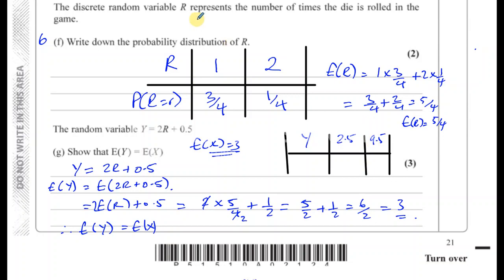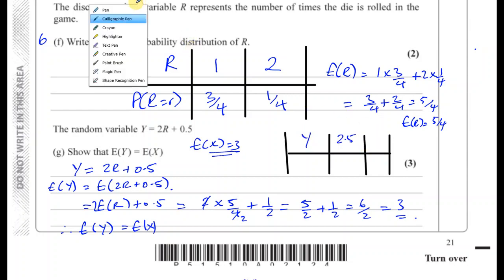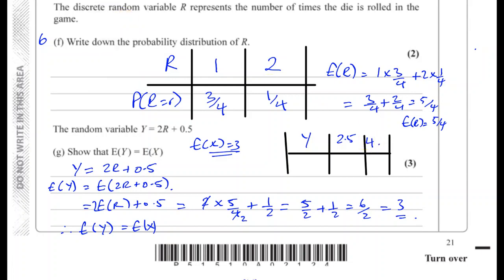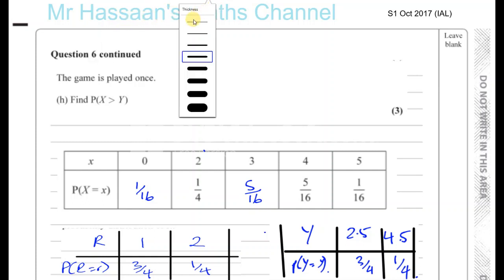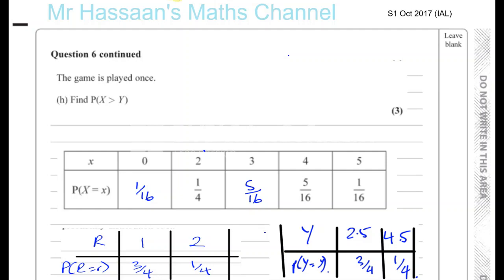The Y distribution table has values 2.5 and 4.5 with probabilities 3 quarters and 1 quarter respectively. Now for the next part: the game is played once and we need to find the probability that X is greater than Y. We've got all the information from the previous tables. We need to find P(X > Y) when the game is played one time.